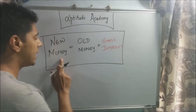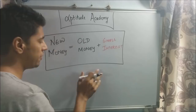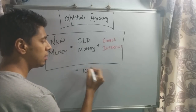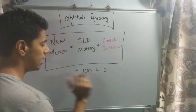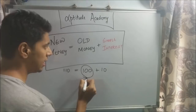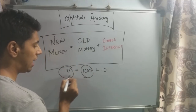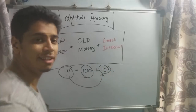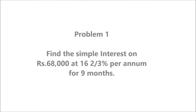Before we start solving our first problem, here's a simple equation: new money equals old money plus simple interest. Relating to the previous example, we deposited 100 rupees, got a simple interest of 10 rupees from the bank, and hence the new money is 110. What you deposit is your old money, what you get back is your new money, and that is because of your simple interest.